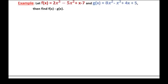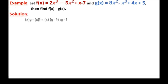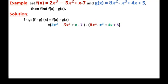Let's do one example. We are given f of x and g of x, and we are asked to find the difference f minus g. So f minus g of x is given by f of x minus g of x, which is: 2x to the power of 3 minus 5x squared plus x minus 7, minus the quantity 8x squared minus x to the power of 3 plus 4x plus 5.